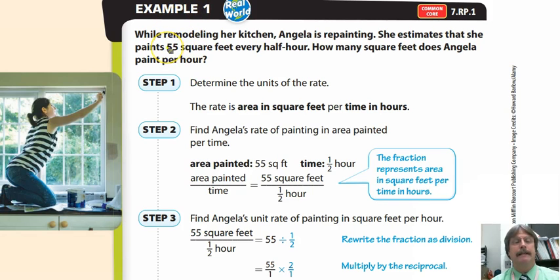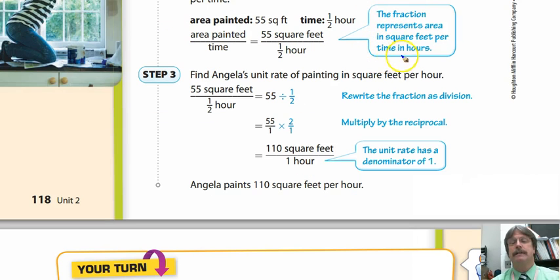Let's highlight the important information: 55 square feet every half hour. How many square feet does she paint per hour? Here they're going through the steps. They write down area painted over time. You come up with 55 square feet over every half hour. The fraction represents area in square feet per time in hours.